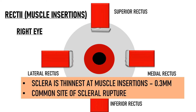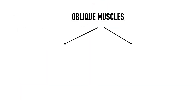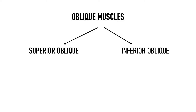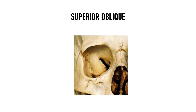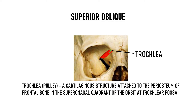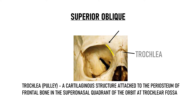Coming to the obliques, each eye contains 2 oblique muscles: the superior oblique and the inferior oblique. The oblique muscles do not arise from the annulus of Zinn. The superior oblique arises from the body of the sphenoid and travels anteriorly to reach the trochlea — a cartilaginous pulley structure attached to the periosteum of the frontal bone at the trochlear fossa in the supranasal quadrant of the orbit.